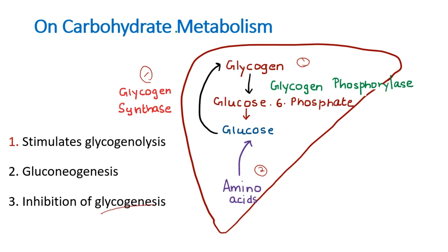So what are the three actions? There is stimulation of glycogenolysis, gluconeogenesis, and inhibition of glycogenesis by inhibition of glycogen synthase. All three of these effects produce an increased release of glucose from the liver, meaning there will be increased glucose in the bloodstream — just the opposite of insulin.